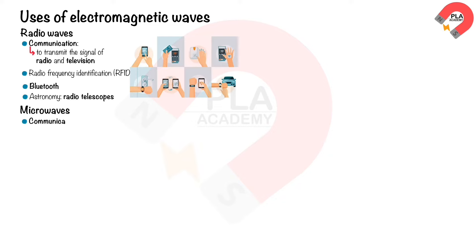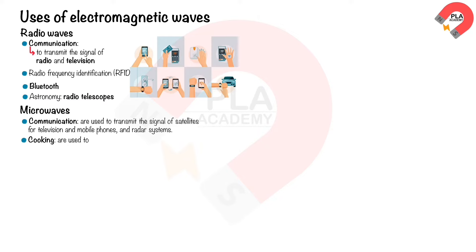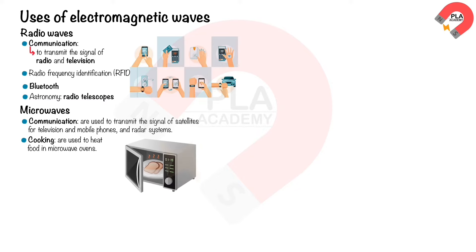Microwaves are used to transmit signals for satellites, television, and mobile phones, and are also used in radar systems. Microwaves are used to heat food in microwave ovens by causing the water molecules in food to vibrate, which creates heat.